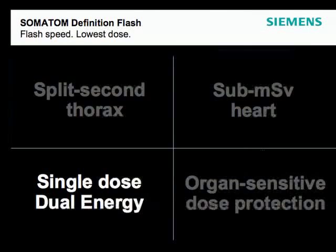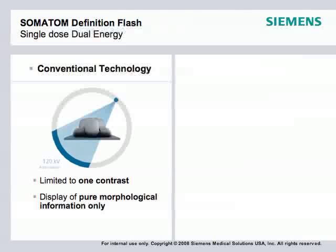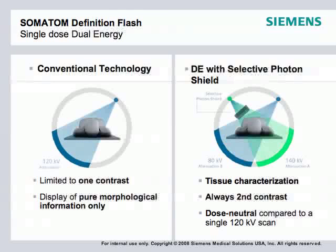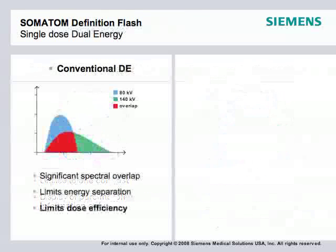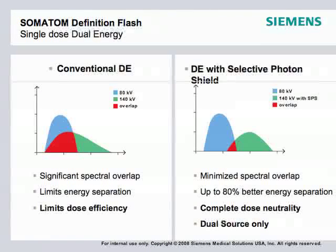Dual energy can now be done in a dose-neutral environment, using tissue characterization with two tubes at 80 kV versus 140 kV. The selective photon shield brings dose levels down to neutral by filtering out low energy coming off the high 140 kV source. This moves from conventional dual energy with significant spectral overlap to minimized spectral overlap — 80% better spectral separation — enabling new software developments and dual energy applications.